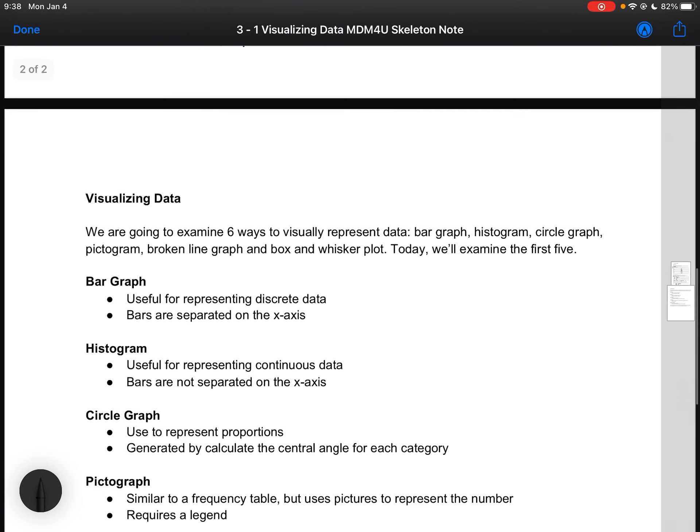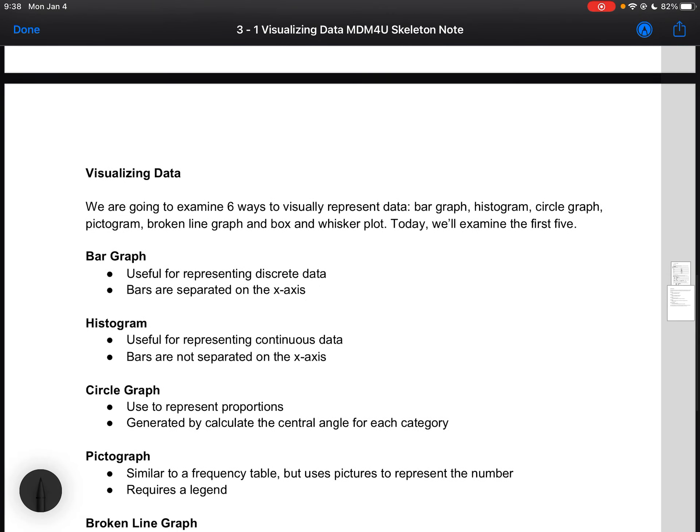When you want to represent the data, over the next few videos we're going to look at six ways to visually represent data: a bar graph, a histogram, a circle graph, a pictogram, a broken line graph, and a box and whisker plot. Today what we're going to do is examine the first five.